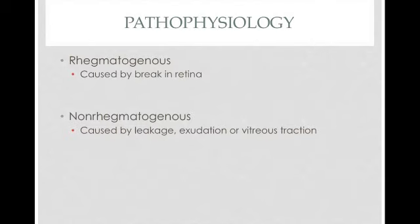What causes retinal detachment? It could be rhegmatogenous, meaning there is a break in the retina. Or it could be non-rhegmatogenous, meaning there's no break but something is separating the two layers — it could be leakage, exudates, or the vitreous actively pulling on it, not to the extent of causing a break, but still pulling it away from the RPE.